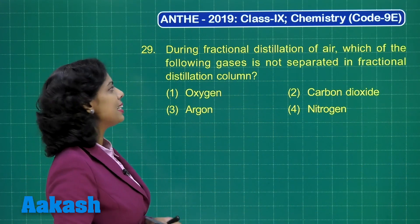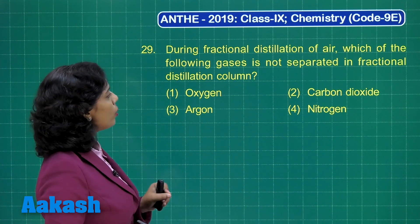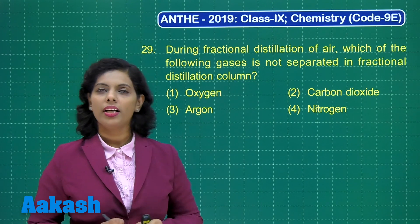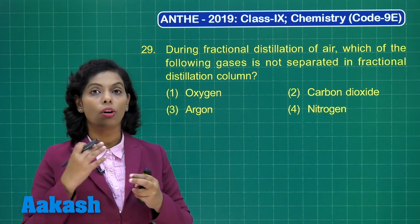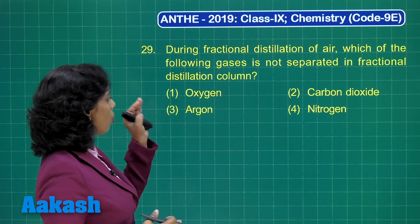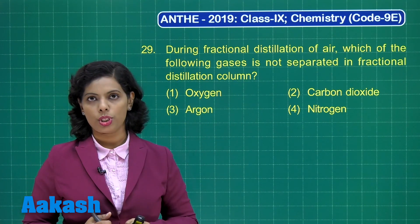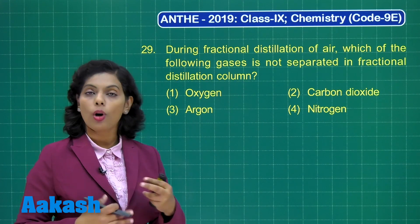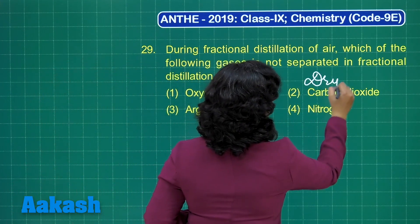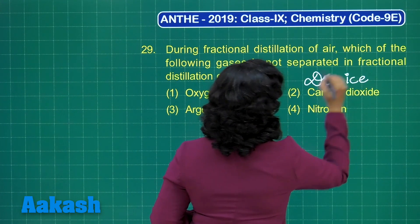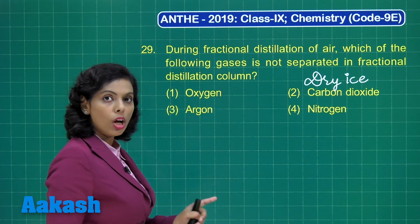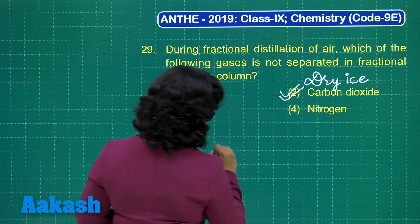During fractional distillation of air, which of the following gases is not separated in the fractional distillation column? In fractional distillation of air, the fractionating column yields oxygen, argon, and nitrogen. But carbon dioxide is obtained as dry ice — not in the fractional distillation column. That is why carbon dioxide becomes the correct answer.